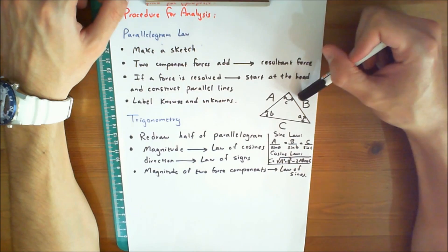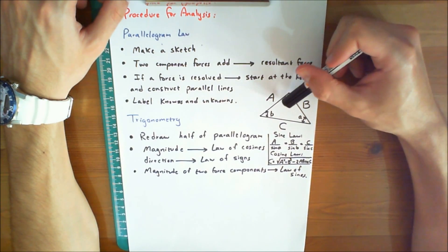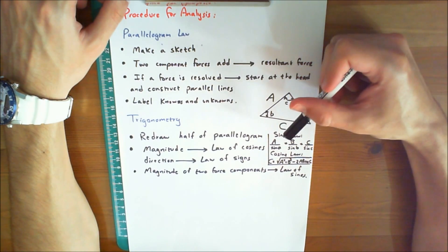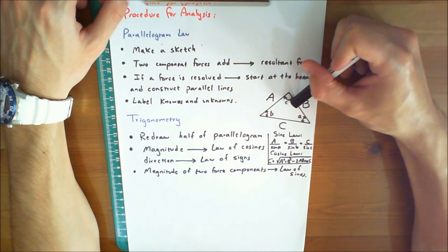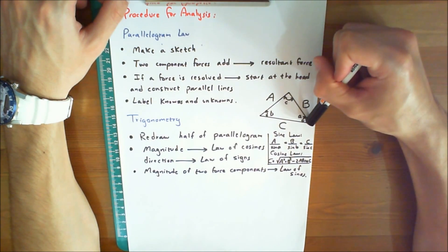An easy way to memorize this triangle is to know that the sides and capital letters are corresponded with small letters. For example, capital C is corresponded by angle C and sine A is corresponded by angle A.